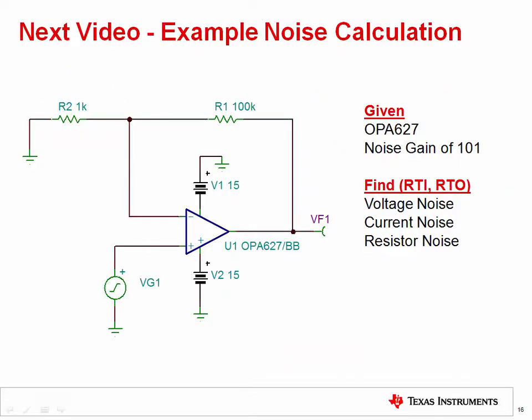In the next video, we will perform a full example noise calculation. This example will use the OPA627 in a non-inverting configuration. The total noise at the output will be the sum of op amp voltage noise, op amp current noise, and resistor noise. We will consider both the 1 over f region and the broadband region in the spectral density curve. Finally, we will have to consider the noise bandwidth and the noise gain of the circuit.